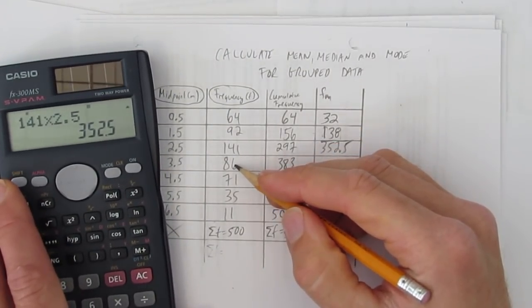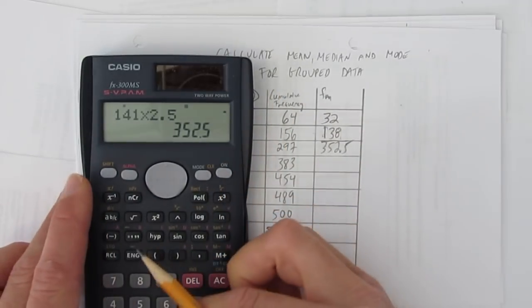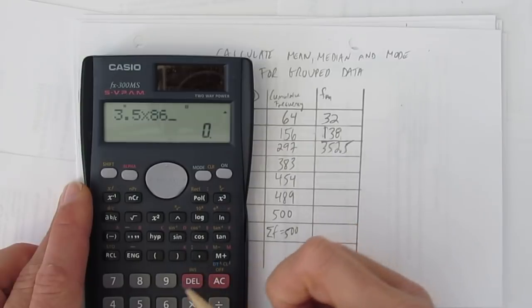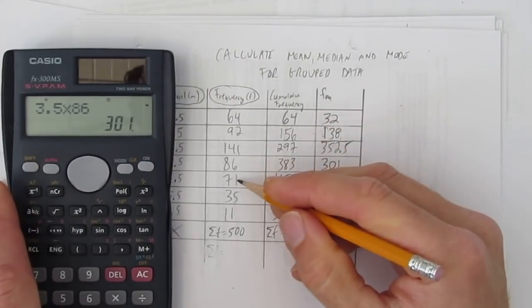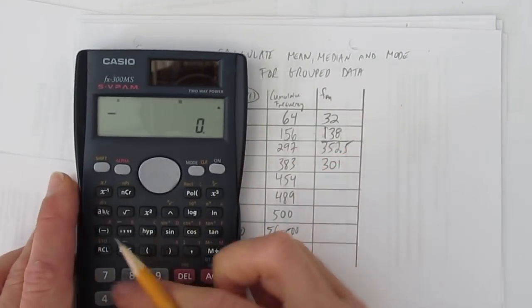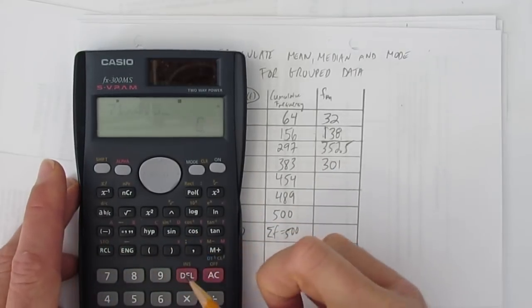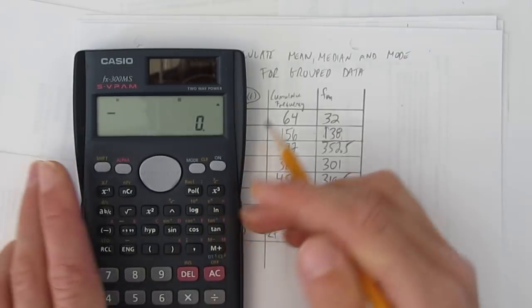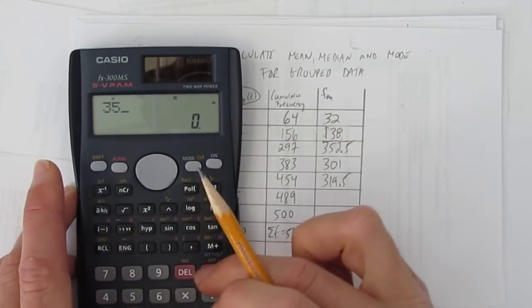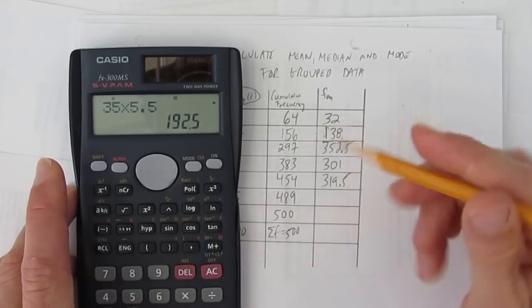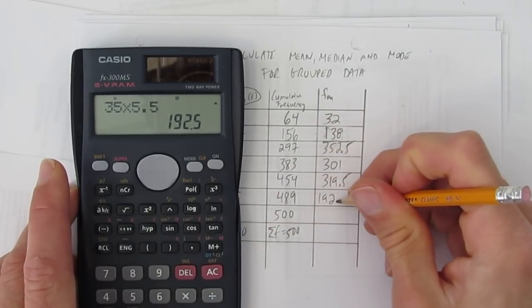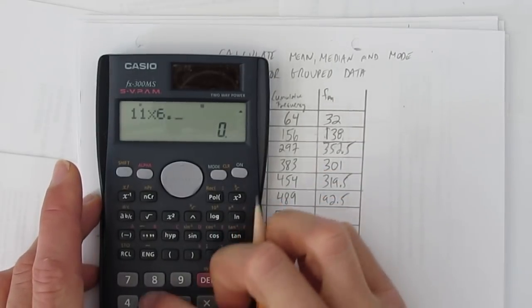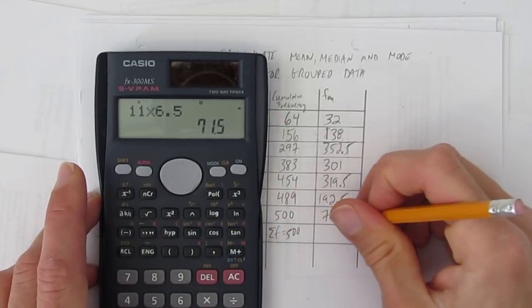What's 86? These things, 86 of them, and they each count for 3.5. 3.5 times 86. And I get 301. 71 times 4.5. I have 71 of the 4.5 things. That's 319.5. I have 35 of the 5.5s. That's 192.5. And finally, I have 11 6.5s. Which is 71.5.